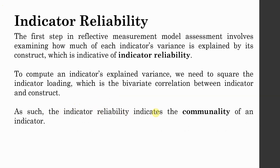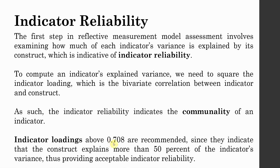The indicator reliability indicates communality of an indicator. Indicator loadings above 0.708 are recommended since they indicate that the construct explains more than 50% of the indicator's variance, thus providing acceptable indicator reliability. In summary, if your indicator loading is 0.708 or above, this means that 50% of the indicator's variance is explained by the construct, showing acceptable indicator reliability.